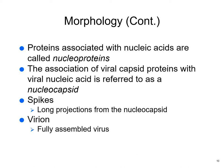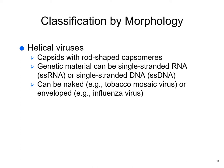Proteins associated with nucleic acids are called nucleoproteins. The association of the viral capsid proteins with the nucleic acid is called a nucleocapsid, and spikes are long projections from the nucleocapsid. The virion is a fully assembled virus. When testing for the COVID vaccine's effectiveness, they look for spike proteins, but if they're looking for infection, they look for the N protein — the nucleic acid-associated protein.